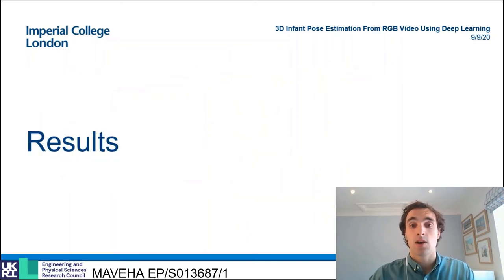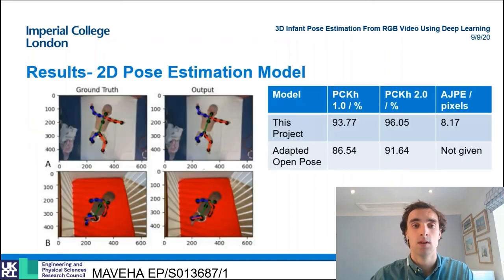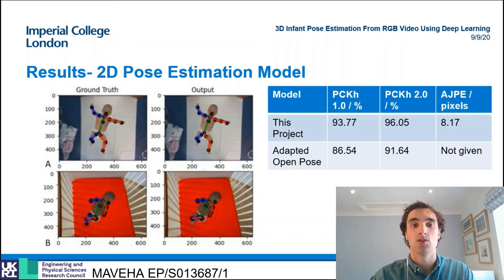Now the model architecture has been laid out, I will present quantitative metrics and visualizations of the performance of the 2D and 3D pose estimation models developed for this project. Firstly, the 2D model. The images on the left show visualizations of a success case and a failure case. B is a challenging input due to the self-occlusion caused by the crossing of two limbs.